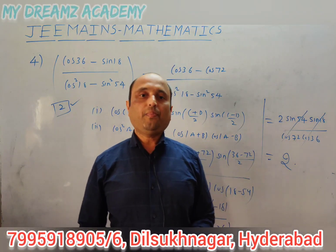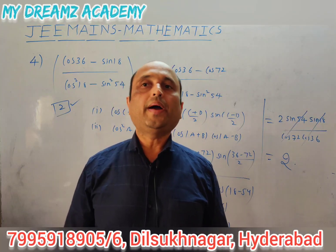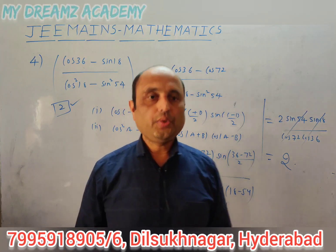The complementary angle identity cos72 = sin18 and cos36 = sin54 allows cancellation. The two terms cancel, giving the answer 2. Please like the video, share with your friends, and subscribe to MyDreams channel. Thank you.